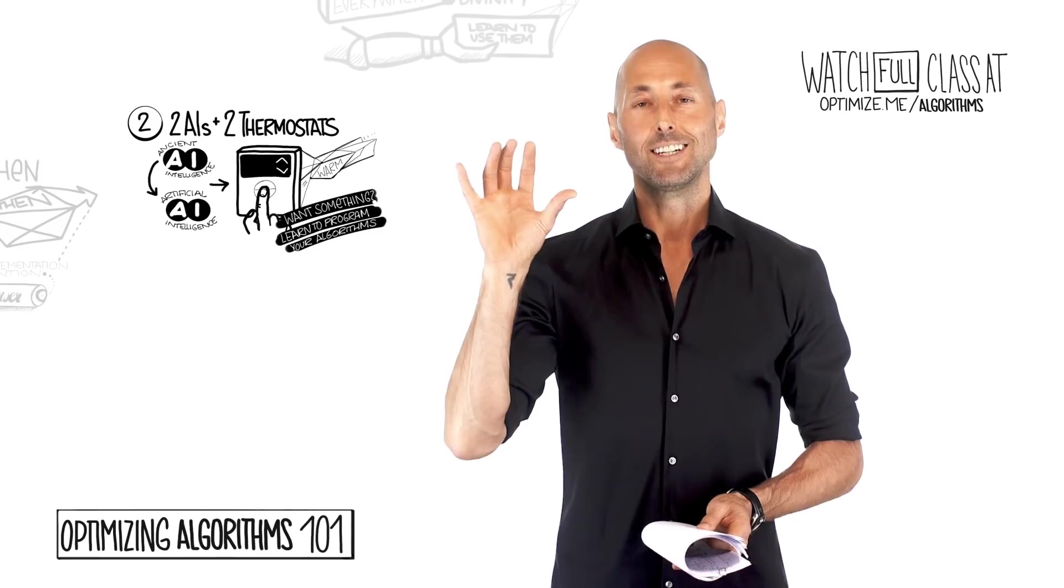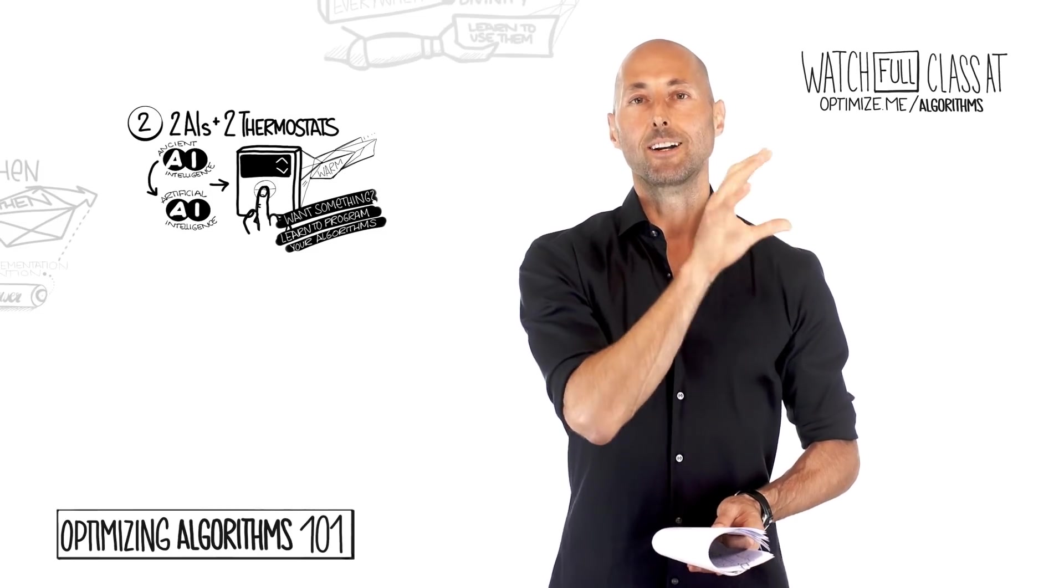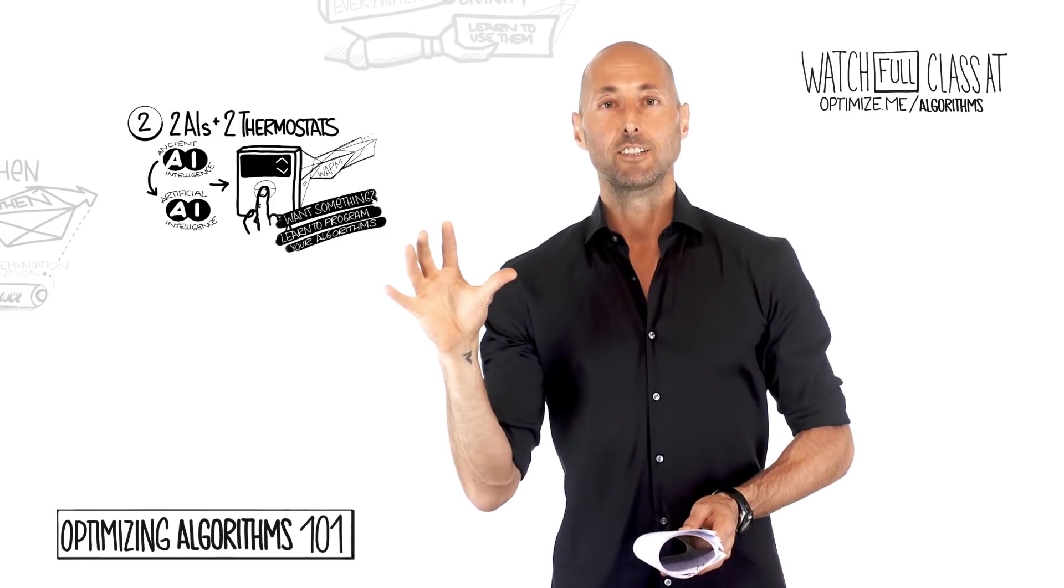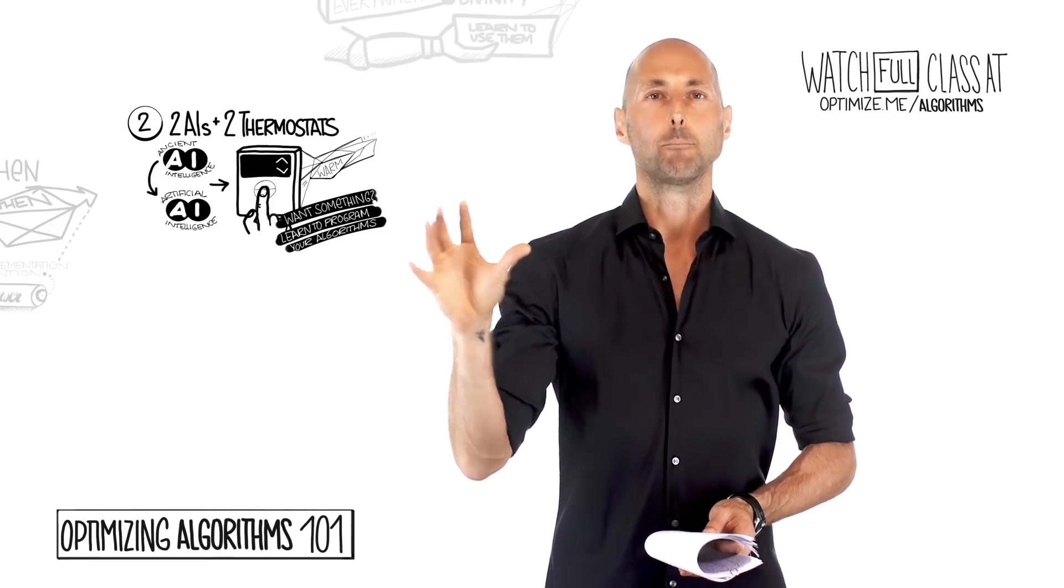Now he's talking about artificial intelligence. We're going to talk about another AI, ancient intelligence. Artificial intelligence, a little over 50 years old. 1959, Dartmouth, brilliant guys and ladies came up with this idea of artificial intelligence.